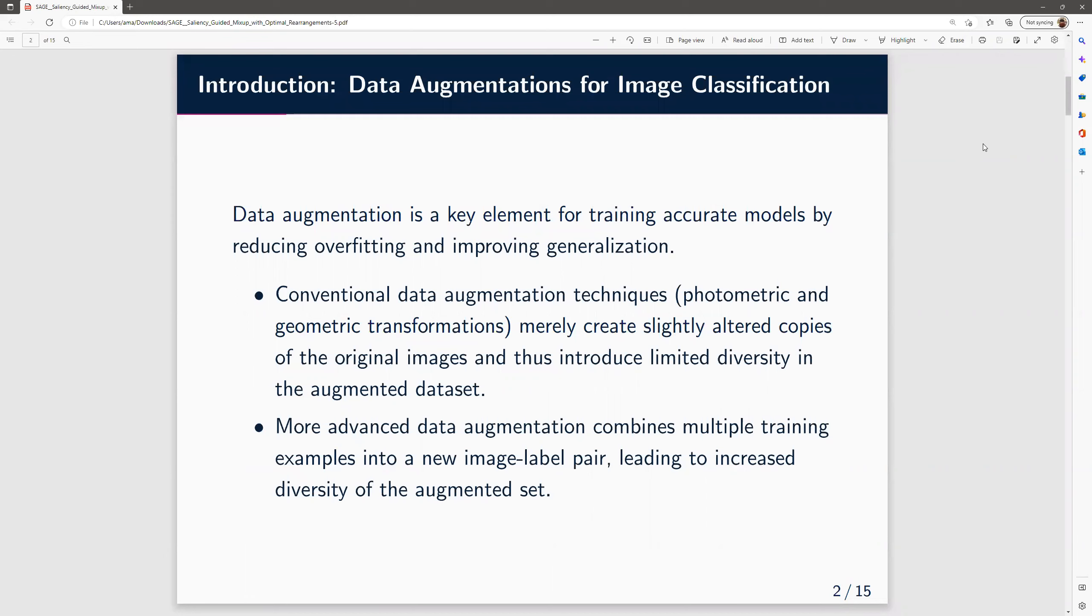Data augmentation is very important for training accurate models since it reduces overfitting and improves generalization. Conventional data augmentation approaches such as photometric and geometric transformations only create slightly altered copies of the original image and thus only introduce very limited diversity in the augmented data set.